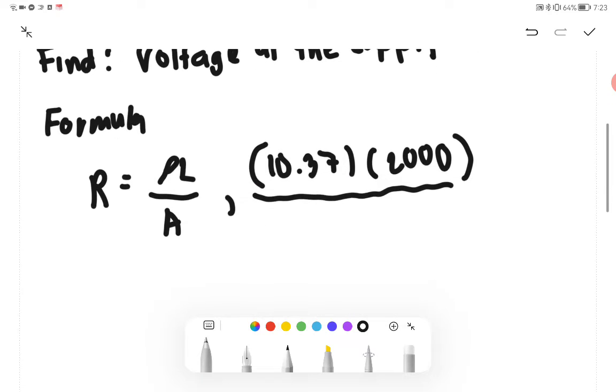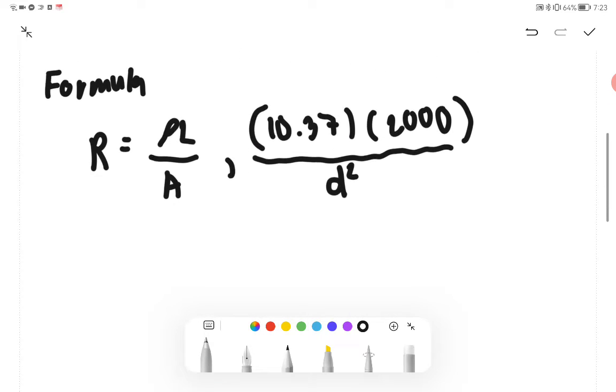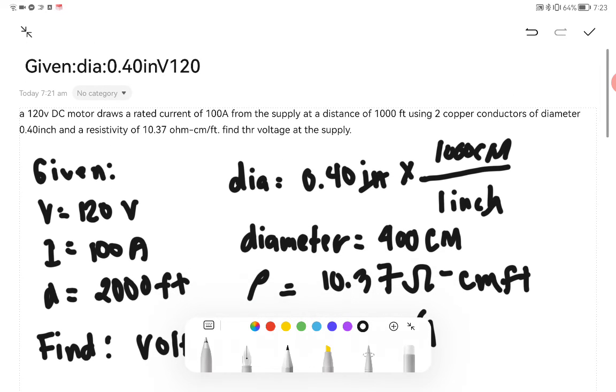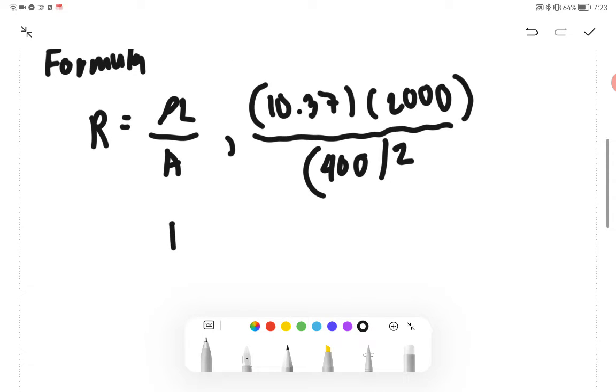We have 400 squared. We have 400 circular mils squared, so therefore we will be obtaining our resistance using the formula R equals ρL over A: 10.37 times 2000 over 400 squared.